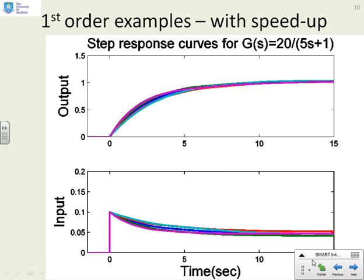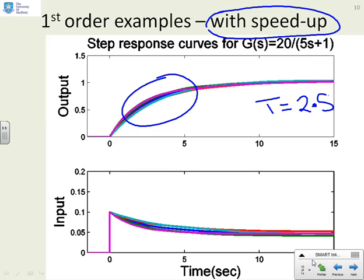What happens if we want to do some speed up? So what we've done in this particular example is we've said we want T equal to 2.5. So we've simply applied a 2 outside our formula. And if you look at the responses here, you'll say again, look, very nice first order responses.